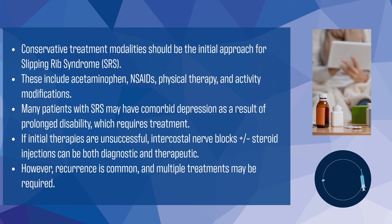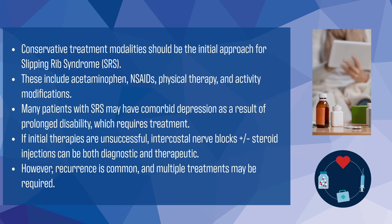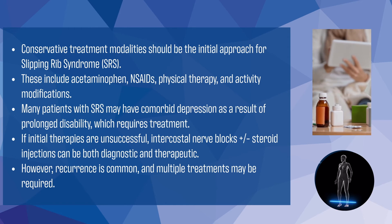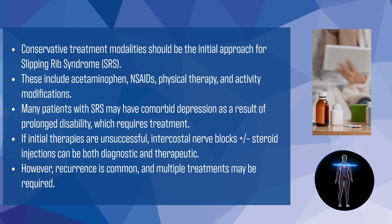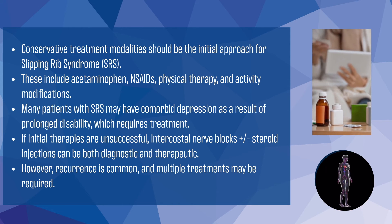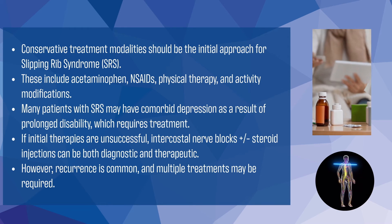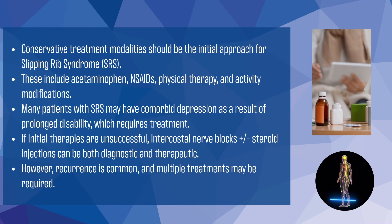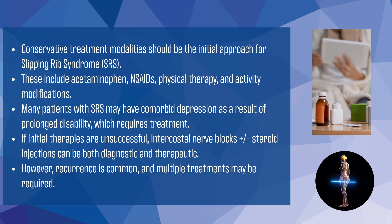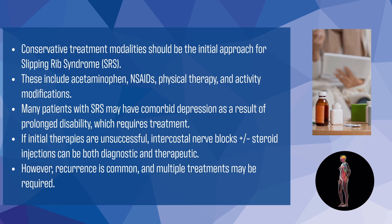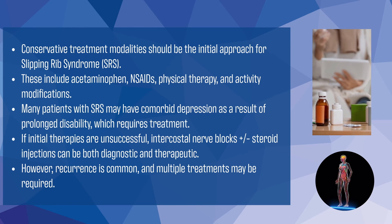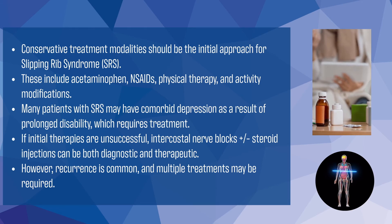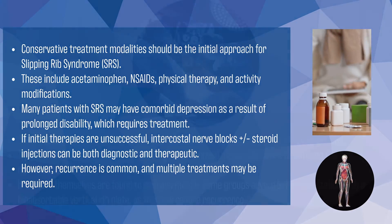In treating Slipping Rib Syndrome, initial conservative methods like acetaminophen, NSAIDs, and physical therapy are recommended. Comorbid depression may require attention due to prolonged disability. If initial treatments fail, intercostal nerve blocks with or without steroids can be considered, although recurrence is common, often necessitating multiple treatments.